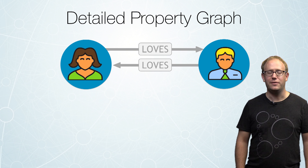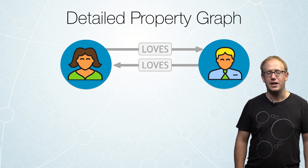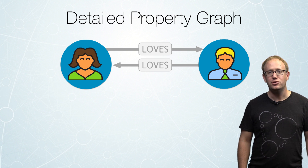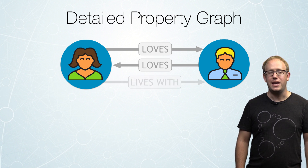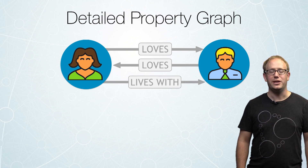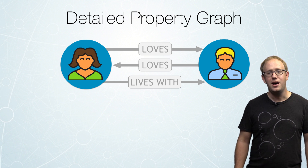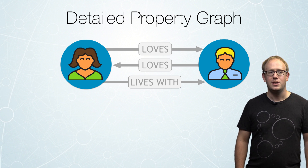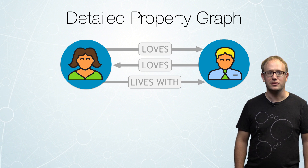Let's start from the simple graph we already did, where we have Ann loving Dan and Dan loving Ann. We can easily add a new relationship on the fly — Ann lives with Dan. We can add this quite easily because Neo4j is schema optional. You can easily adapt to your business in an agile way to add new relationships and properties.